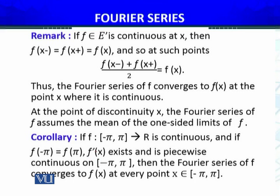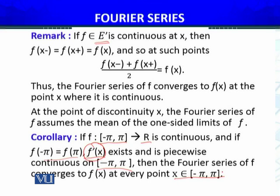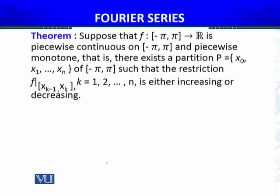There is a small result which we call a corollary. If F is defined on [−π, π] to real numbers, is continuous, and F(−π) equals F(π), and F' of X exists and is piecewise continuous — functions in E prime are those that are left and right differentiable — then if the function is differentiable at a point, the left and right derivatives are equal. Under these conditions, the Fourier series of F converges to F(x) at every point of the interval. None of these conditions can be relaxed; counter-examples have been constructed when any condition is removed.